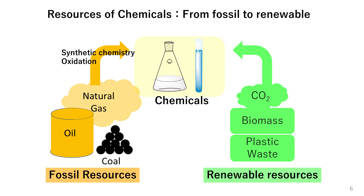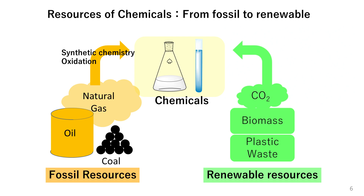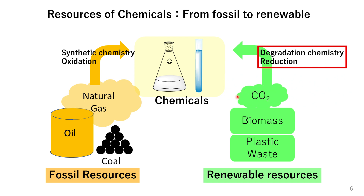In the conventional use of fossil resources, the dominant approach involved breaking down petroleum through cracking, dividing naphtha into smaller carbon fragments of two, three, or four atoms, and then assembling these fragments to create necessary products through synthetic chemistry. Natural gas and petroleum are composed solely of carbon and hydrogen — the carbon is in a reduced state. Therefore, to utilize these resources, oxidation reactions were the predominant chemical reactions. On the other hand, carbon dioxide has only one carbon atom and represents the ultimate combustion form of carbon. It's in the most oxidized state, so if we intend to use such resources, we would need to reduce the carbon back.